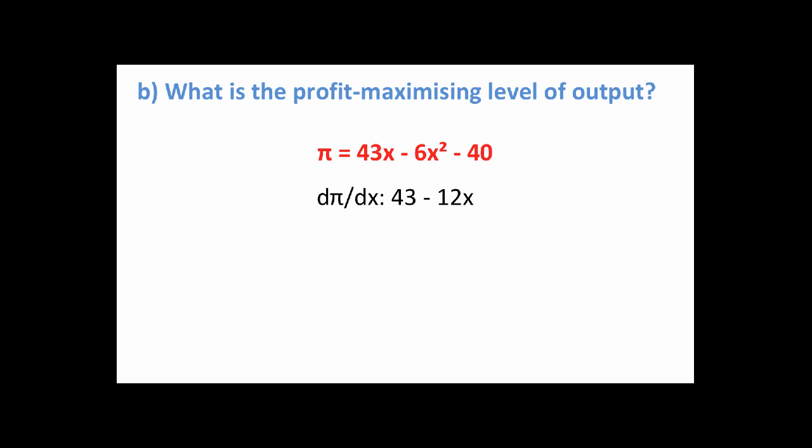A shortcut is, if you see, in this case, 43x, you just remove the x, you're left with 43. The -6x squared, you multiply the power of 2 by the -6 to give you the -12, and leaving the x there, you reduce your power by 1. So 2 minus 1 is going to give you to the power of 1, and it's also written as -12x.